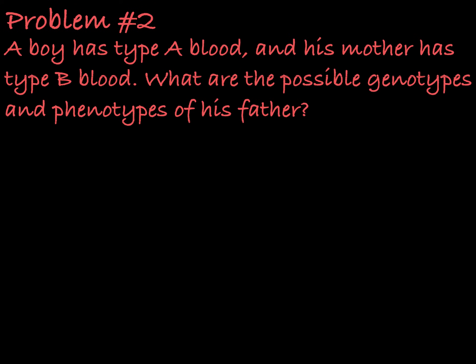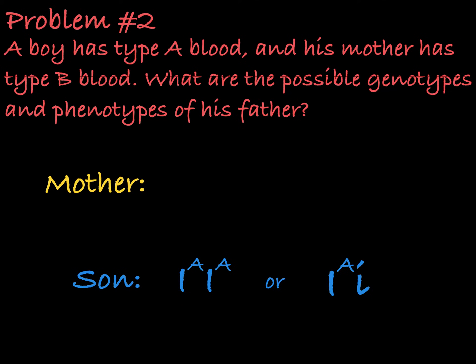Next question. A boy has type A blood and his mother has type B blood. What are the possible genotypes and phenotypes of his father? The son is type A, meaning he could either be homozygous ia or heterozygous ia little i. The mother is type B, meaning her genotype could be homozygous ib or heterozygous ib little i.